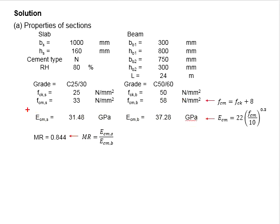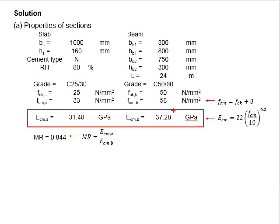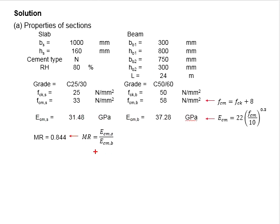Since we have calculated the modulus of elasticity, we can calculate the modification ratio. It is obtained by dividing Ecm,slab with Ecm,beam as given in the equation here, which will be equal to 0.844.